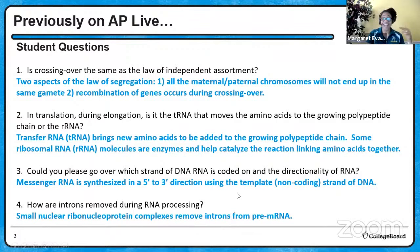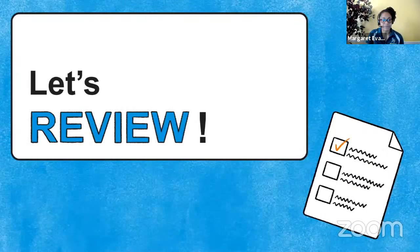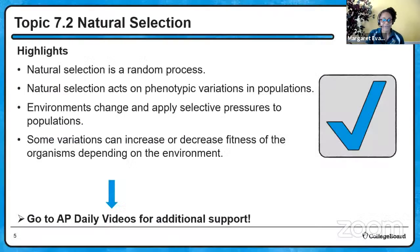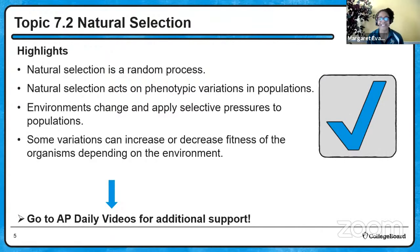Now it's time for us to get into some natural selection and Unit 7. A couple of highlights from 7.2: natural selection is a random process. The word kind of implies selection, like the environment is choosing - I pick you, I choose you - but it is a random process determined by what organisms are best suited for the environment based on the traits they just happen to have, and whether those traits match the environmental conditions for survival and reproduction.